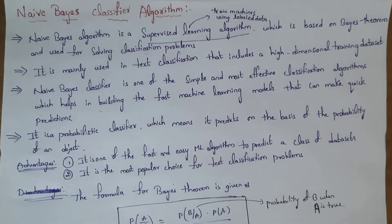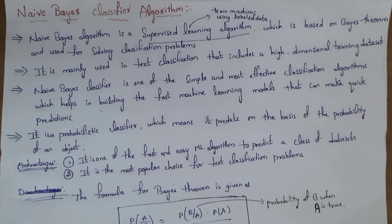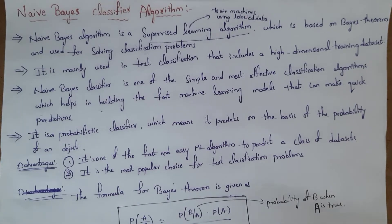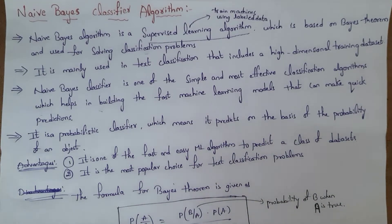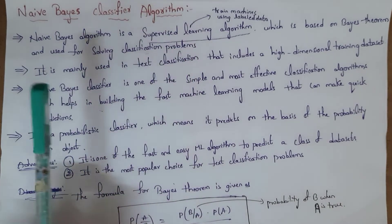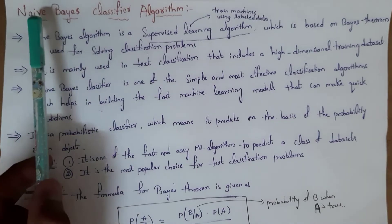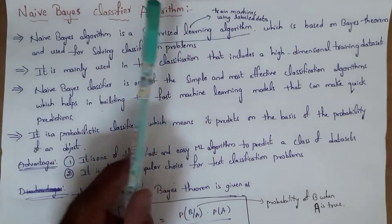The Naive Bayes algorithm is a supervised learning algorithm. A supervised learning algorithm is one which uses labeled data to train machines. Labeled data means data which contains both input as well as output. The Naive Bayes classifier algorithm is based on Bayes' theorem and is used for solving classification problems.